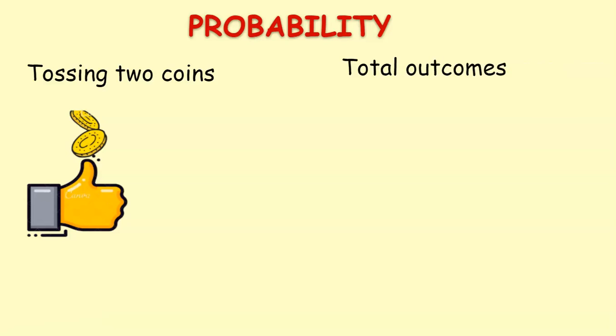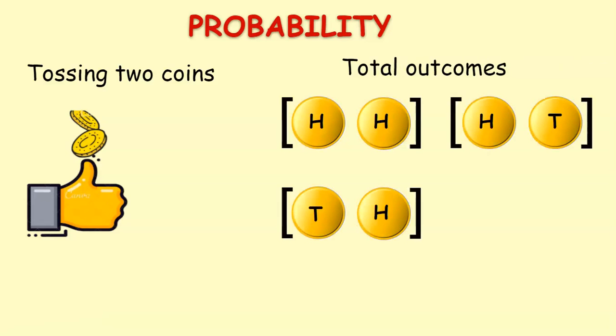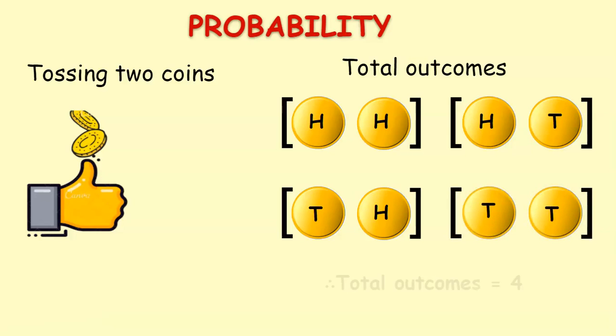The outcomes may be two heads, head and tail, tail and head, and two tails. Therefore the total outcomes are four.